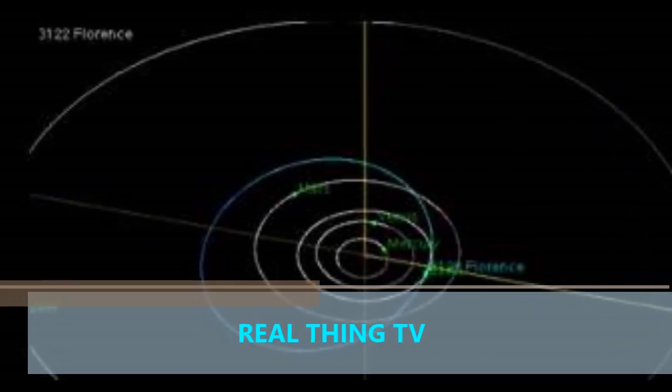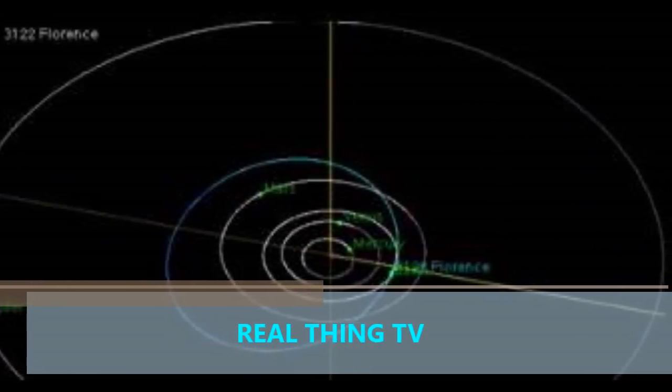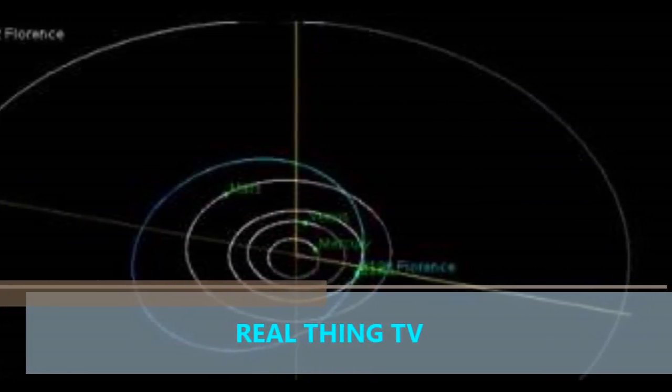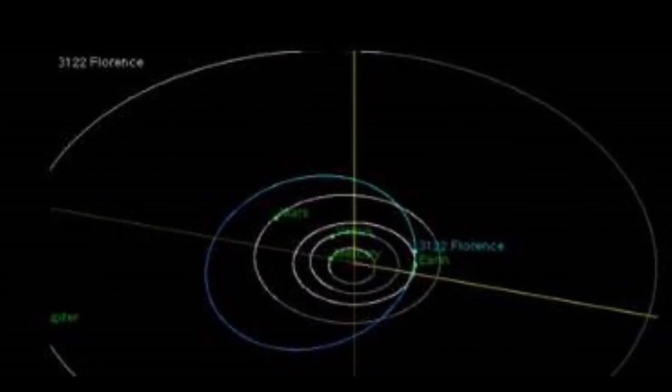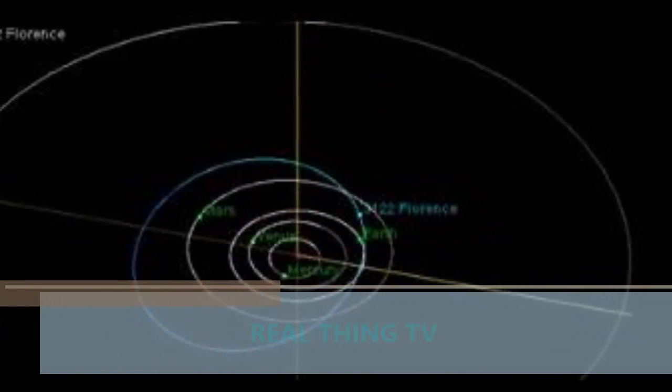The 3-mile-wide asteroid, big enough to wipe out all life on Earth 5 times over, will pass by at a distance of just 4 million miles, a hair's breadth in astronomical terms.